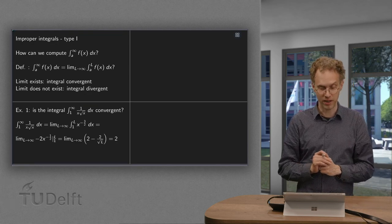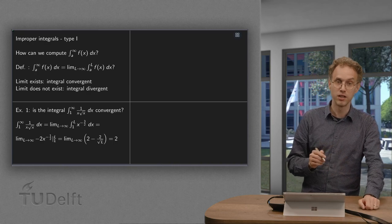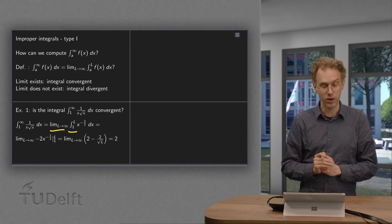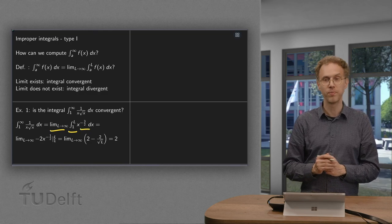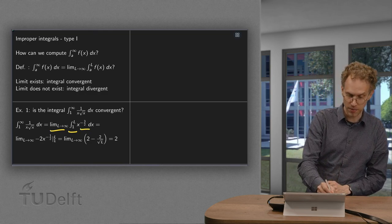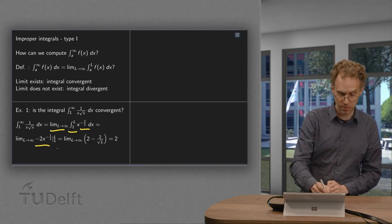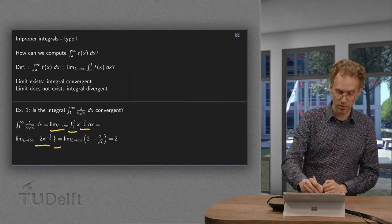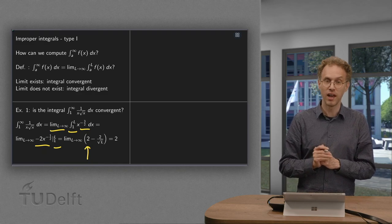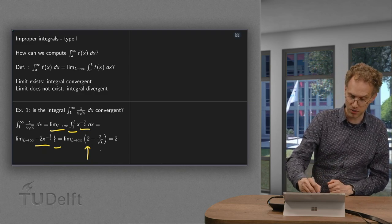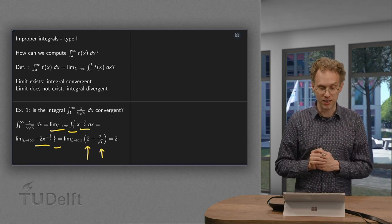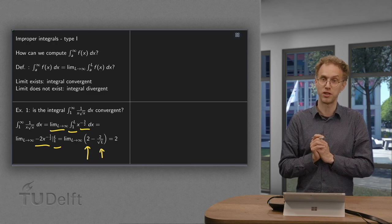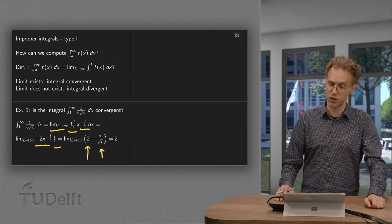What about the integral of 1 over √x² dx from 1 to infinity? We integrate from 1 to l and then take l to infinity. Now 1 over √x² equals x to the power minus 3/2. An antiderivative is minus 2x to the power minus 1/2, evaluated between the boundaries. Plugging in: the lower boundary gives minus 2, so minus minus 2 is plus 2, and the upper boundary gives minus 2 over √l. Taking l to infinity, the second term goes to 0, and we end up with 2. So this integral is convergent and converges to 2.